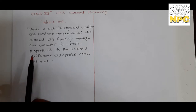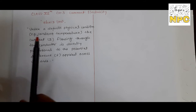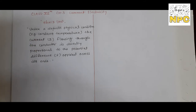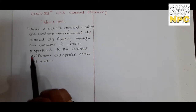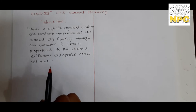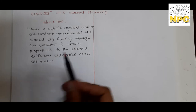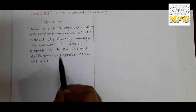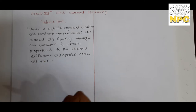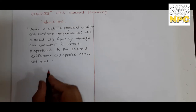Ohm's Law: under a definite physical condition — for example, constant temperature or constant pressure — the current flowing through a conductor is directly proportional to the potential difference applied across its ends.